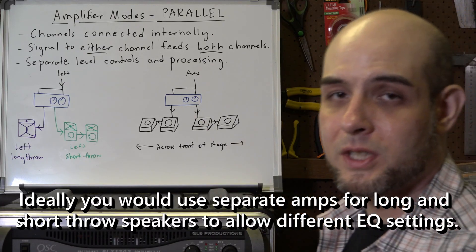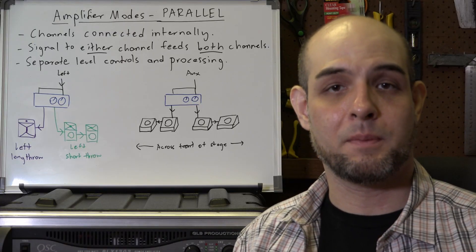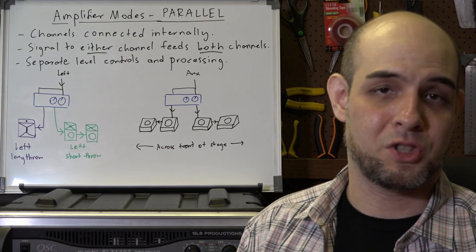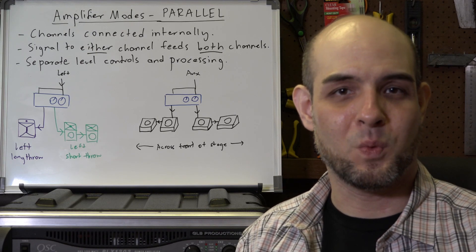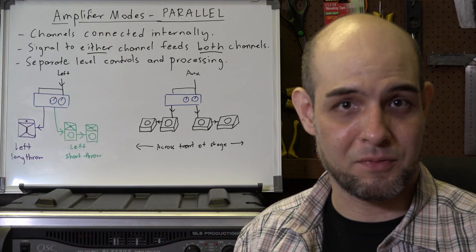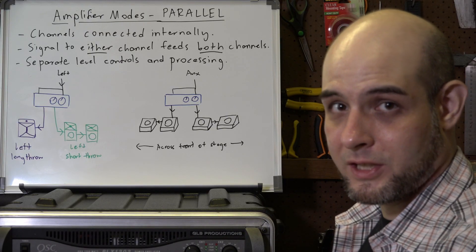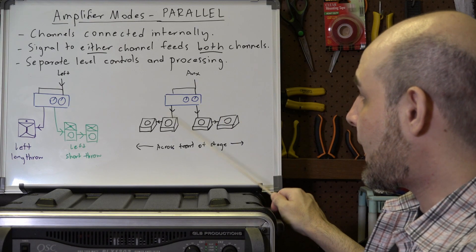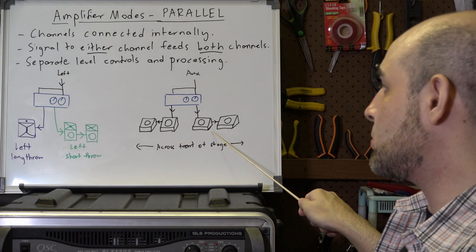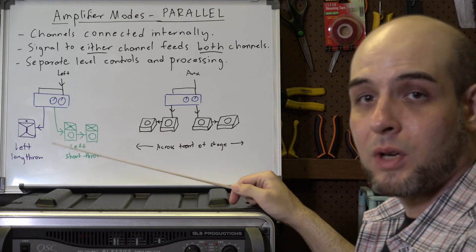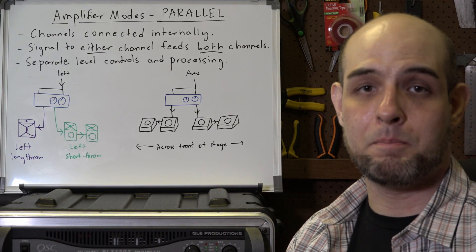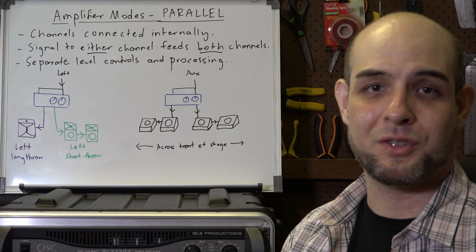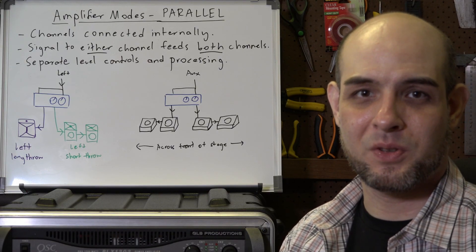There are many different ways of using the two channels. If you were running a very large system with four cabinets per side, you might simply connect two cabinets to channel one and two cabinets to channel two, pointing them in whatever direction you need for appropriate coverage. Another use is with stage monitors — the amplifier is fed a signal from an aux send, and wedges are split across the two channels and strung across the front of the stage, such as at a big band concert where everybody needs to hear the singer.